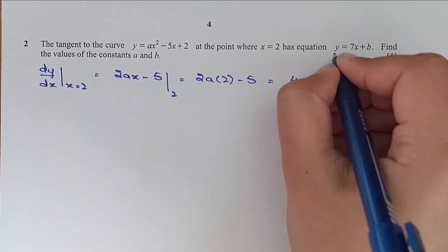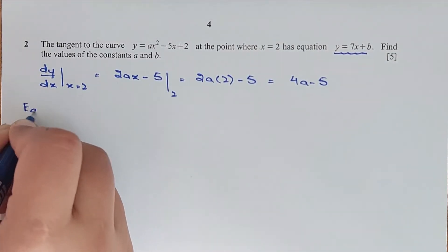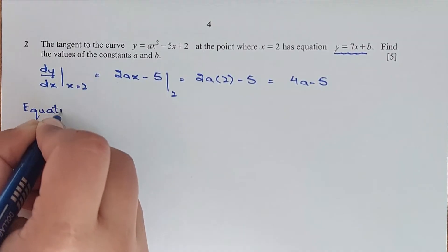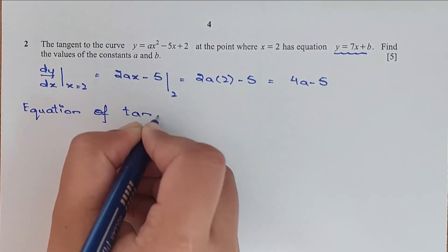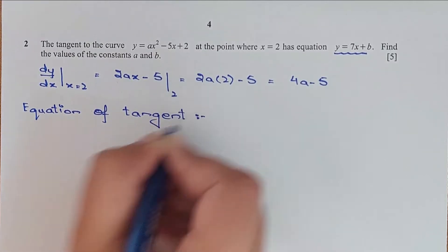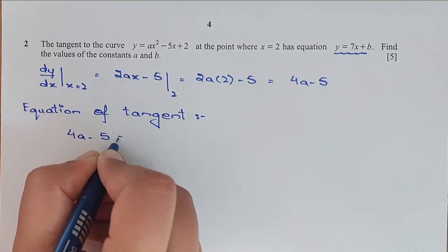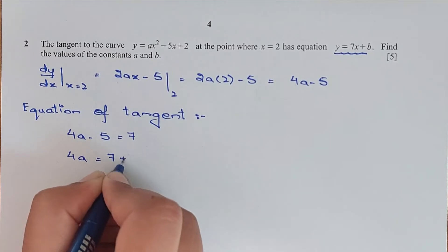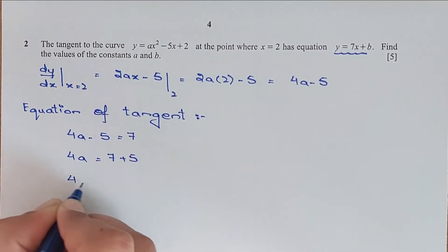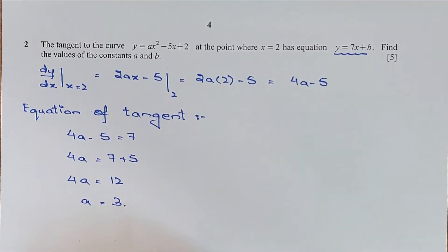This is the equation of tangent we have given. To find the a value we compare the gradients. We have gradient 4a minus 5, which equals the gradient 7. So 4a equals 7 plus 5, so 4a equals 12, so a is 3.